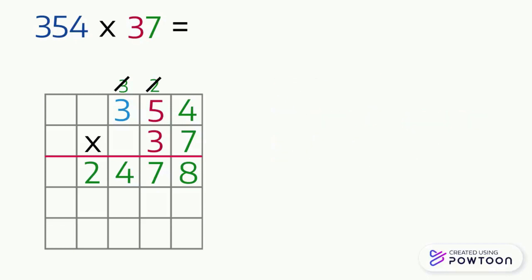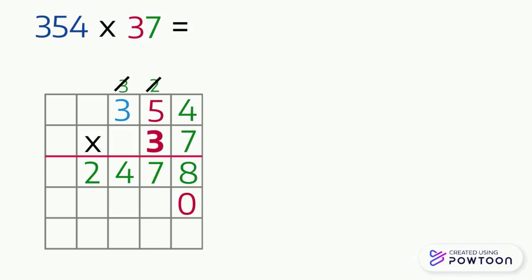The multiplication problem is not done yet — now we must move on to the tens digit, which is 3. The result of multiplying by 30 will be written on the second answer line, just below the first one. Since we want to multiply by 30, to simplify the calculation we put a zero in the ones place column of the second answer line. Now it remains only to multiply by 3.